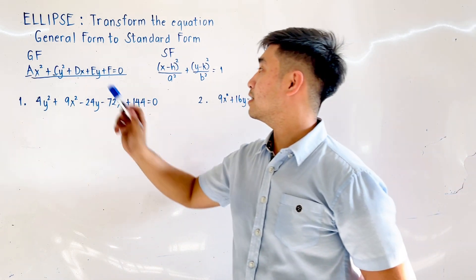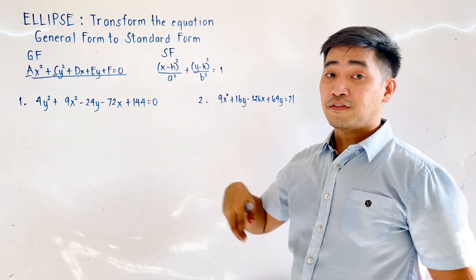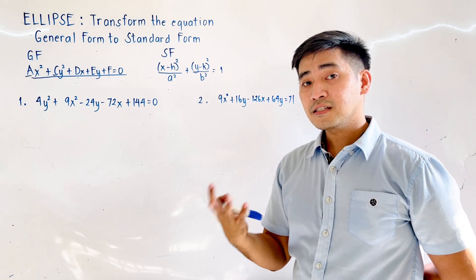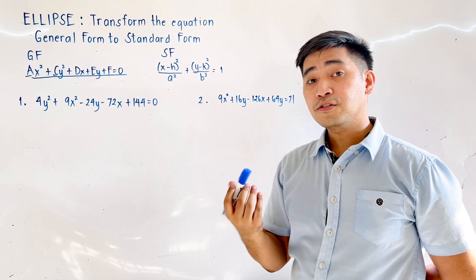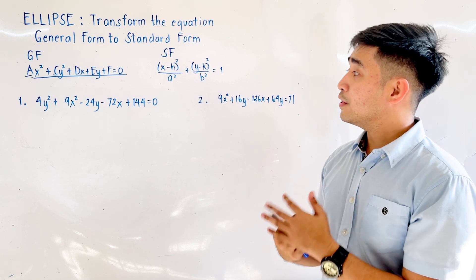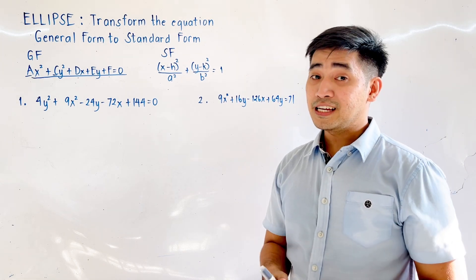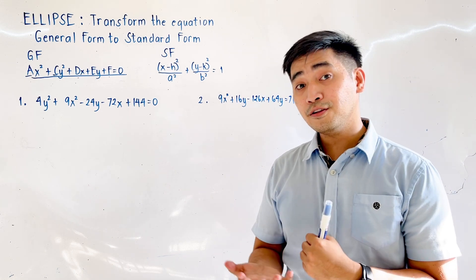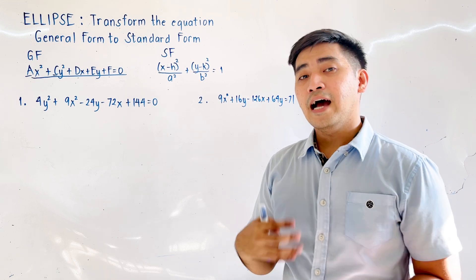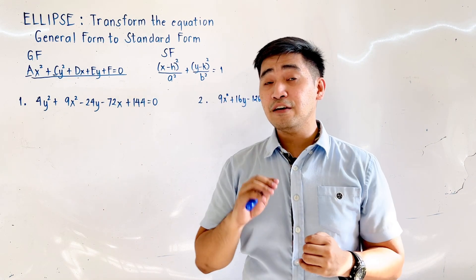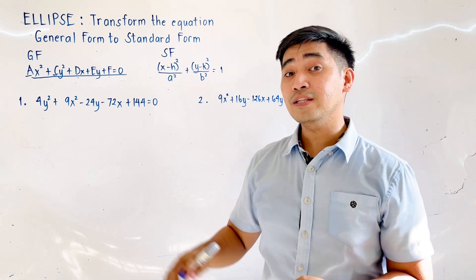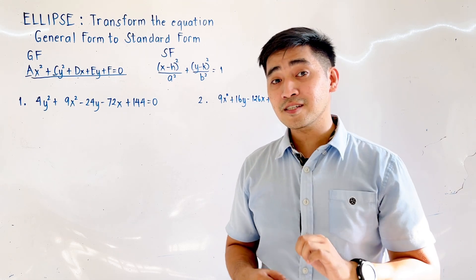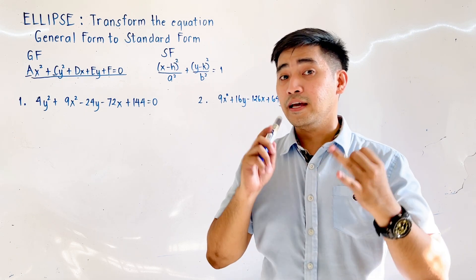So this is the standard form and this is the general form. From the standard form, we will be able to identify the center and the axis — whether it is a major vertical axis or major horizontal axis — and determine whether an ellipse is vertical or horizontal. The keyword when transforming from general to standard form is: we need to complete the square. Always remember that an ellipse has two variables being squared: x² and y².